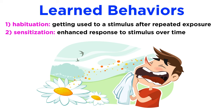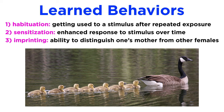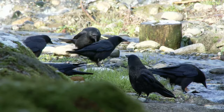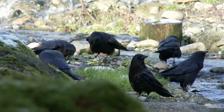Then there's imprinting, an adaptive function that allows a young animal to distinguish its own mother from other females of the same or different species, and to remain near her for safety and protection. Learned behaviors can also come about from play and observation. Crows, for example, are notorious for their knack for observation-based learned behaviors, including solving puzzles and using tools.